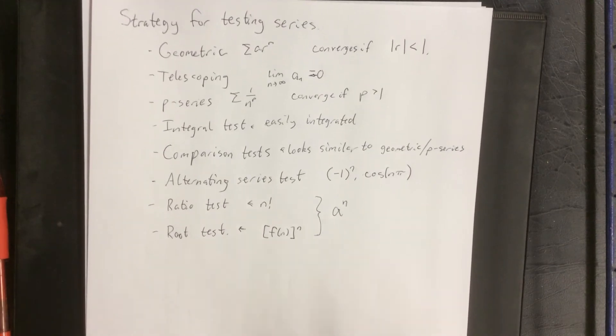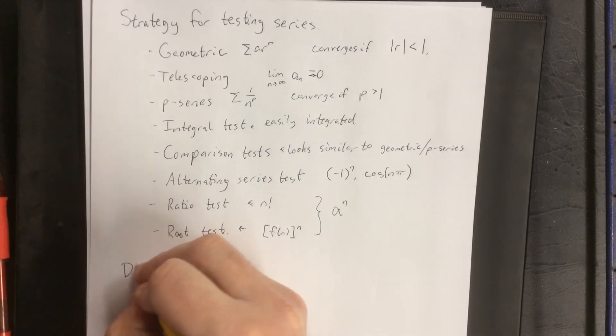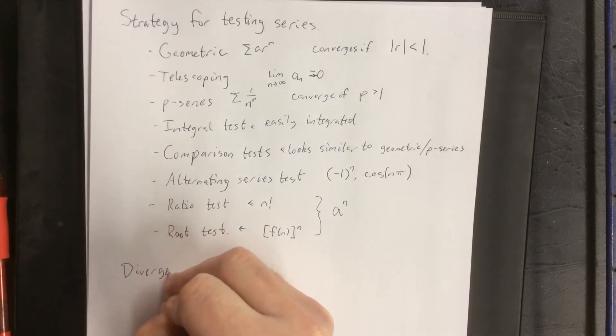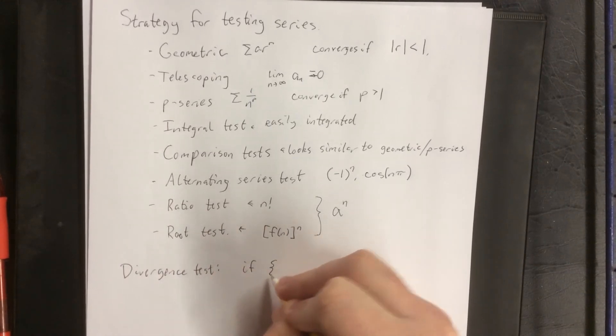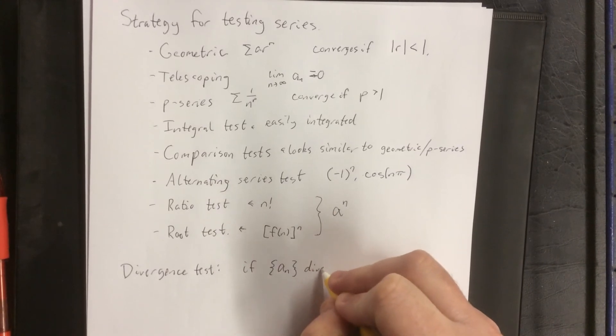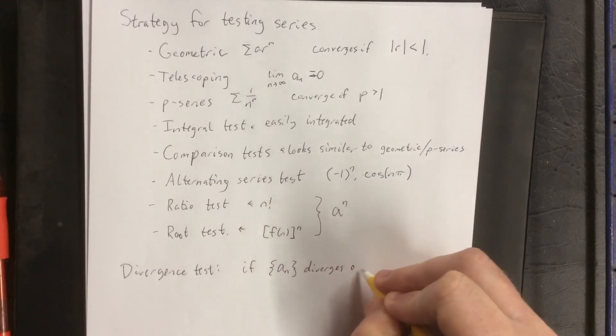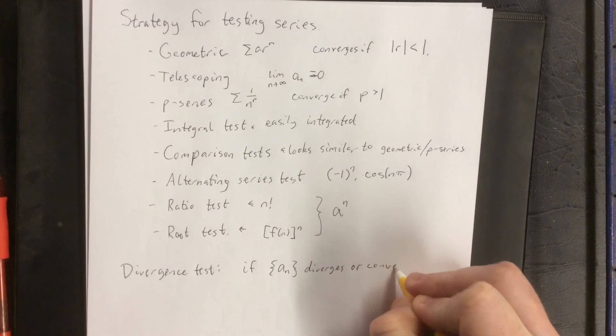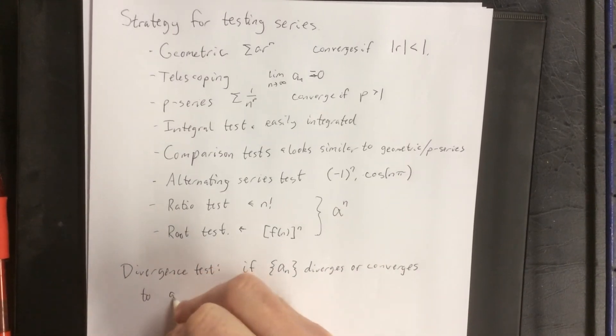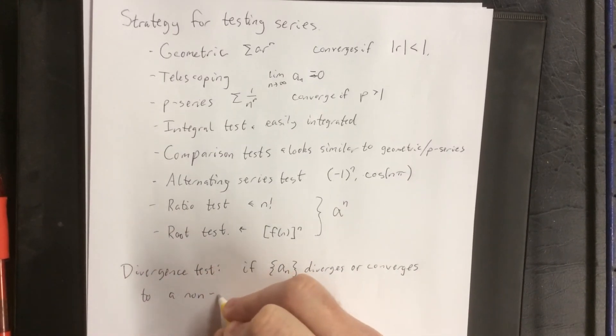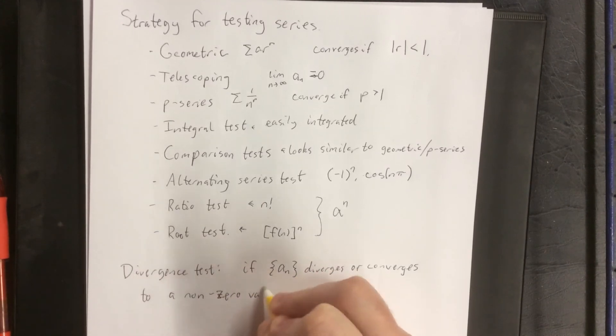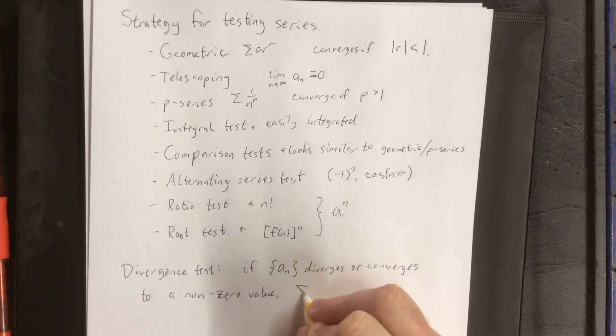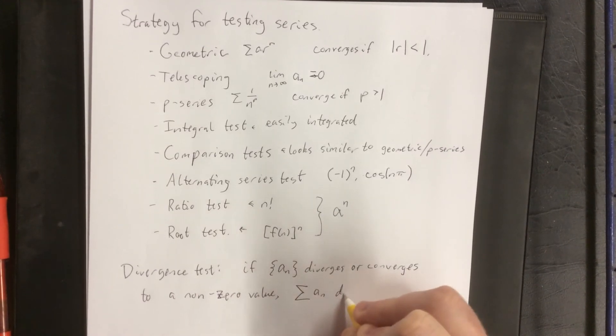Now there are a couple other things that we should talk about, which is the divergence test, which says that if the corresponding sequence diverges or converges to a nonzero value, then the series automatically diverges.